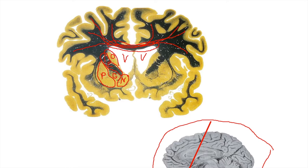The nucleus accumbens is interesting because it is the reward center of the brain — the region associated with addictive behavior. Whenever you do something that gives you a sense of pleasure or joy, that feeling results from a surge of dopamine being released in the nucleus accumbens. When the nucleus accumbens is stimulated, you get a pleasant sensation that encourages you to perform that act again.